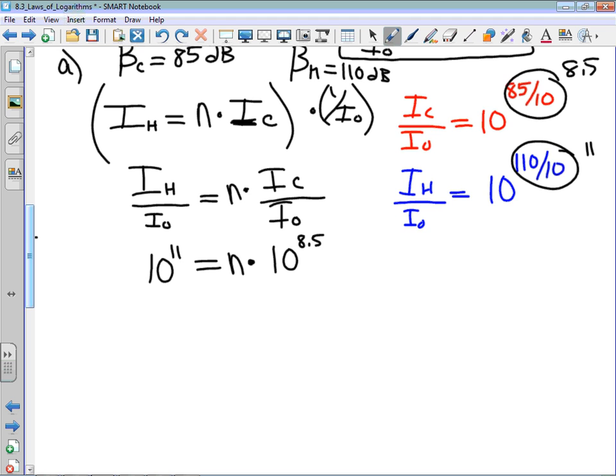To solve for n, I can divide by 10 to the power of 8.5 on both sides. I get that n is equal to 10 to the power of 11 minus 8.5, because they have the same base, which is 10 to the power of 2.5.